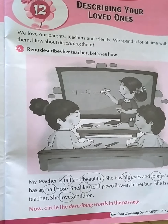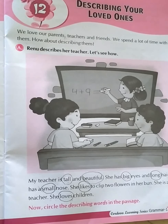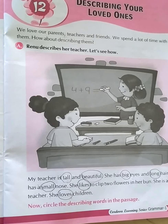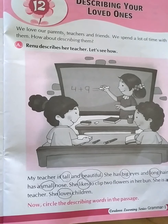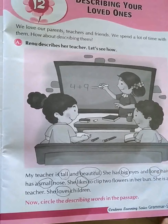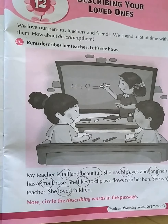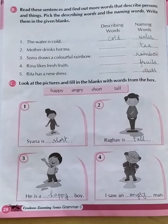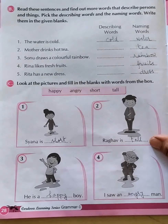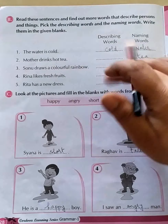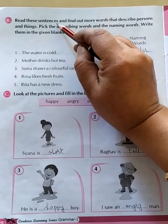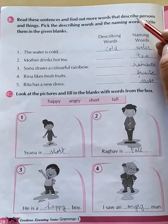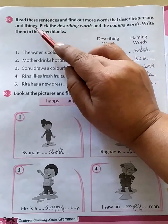Hi everyone, this is your Chapter 12: Describing Your Loved Ones. We have started the chapter and the first part is also done; right now we will read the second part. Now everybody open page 28 and read these sentences to find out more words that describe persons and things.